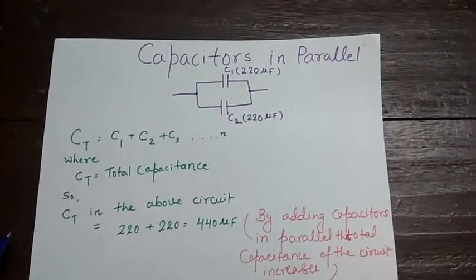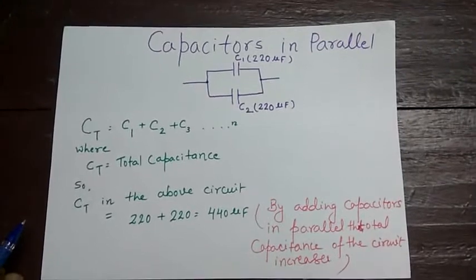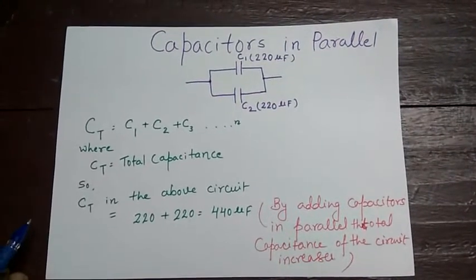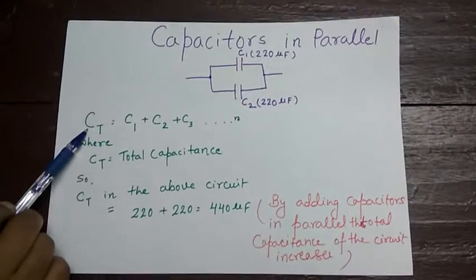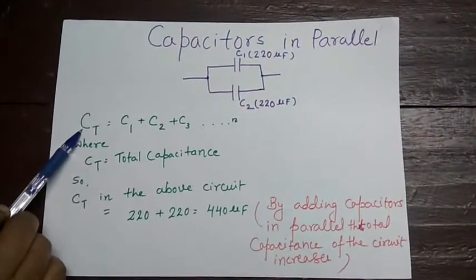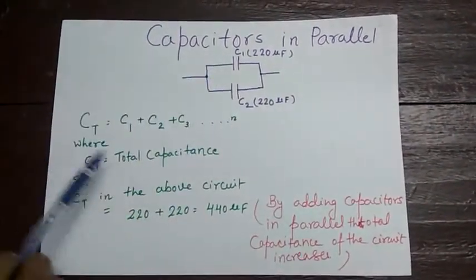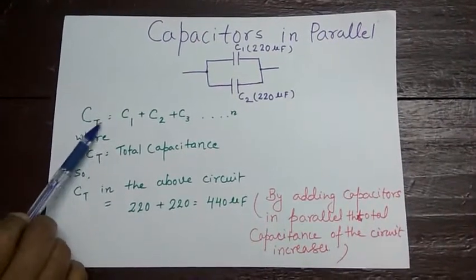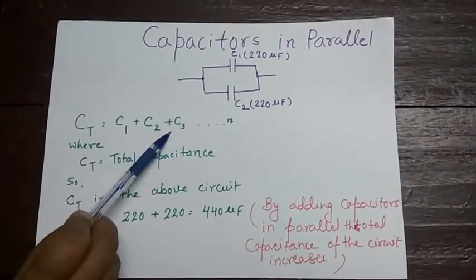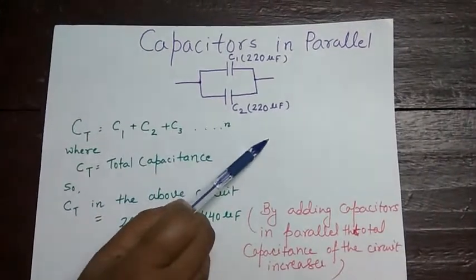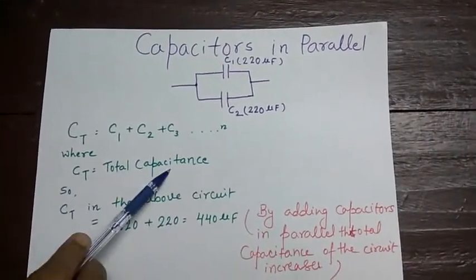Today we are going to observe the different combinations of capacitors — parallel connection and series connection. Here is the formula for capacitance when capacitors are in parallel: CT will be equal to C1 plus C2 plus C3, for n numbers of capacitors, where CT stands for total capacitance.